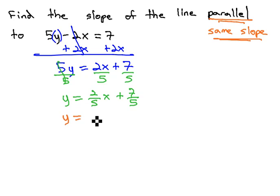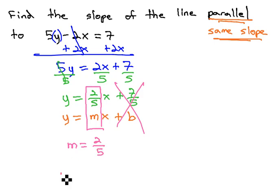If we recall, the slope intercept formula is y equals mx plus b. We don't really care what the b is. What we care about is this m, or the slope. The slope of this line is 2 fifths, and so the slope of a parallel line will be the same, 2 fifths as well.